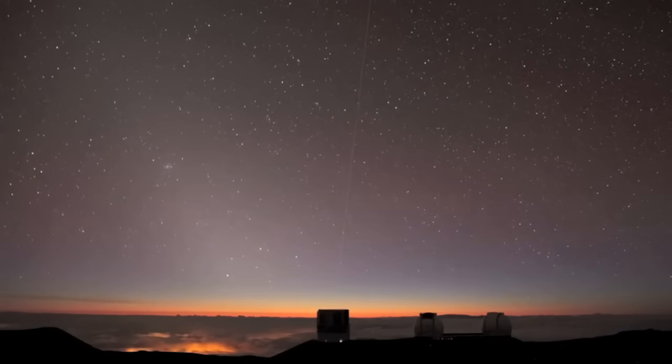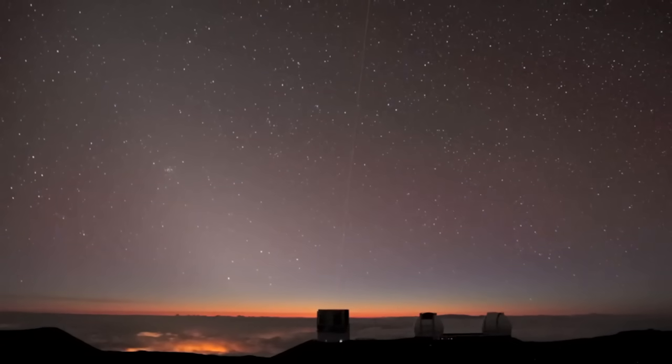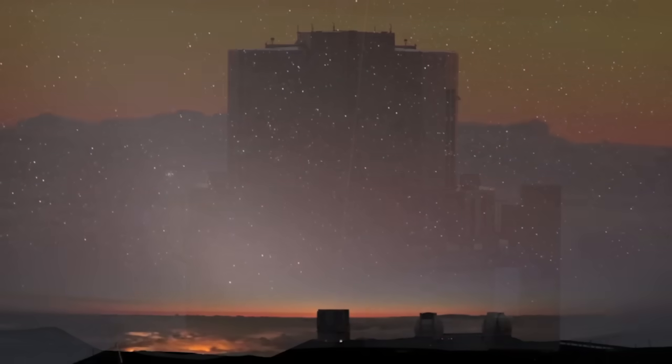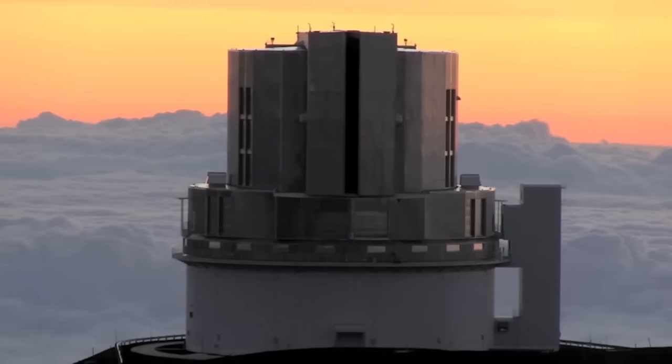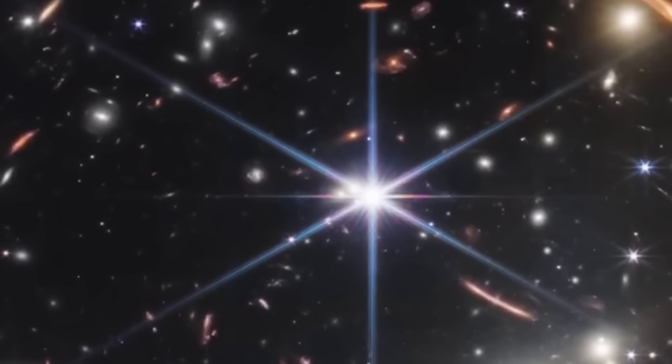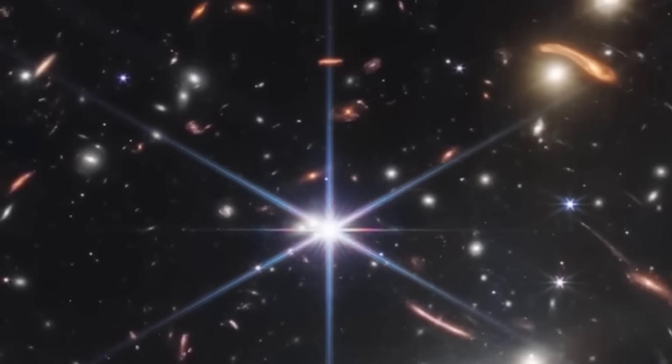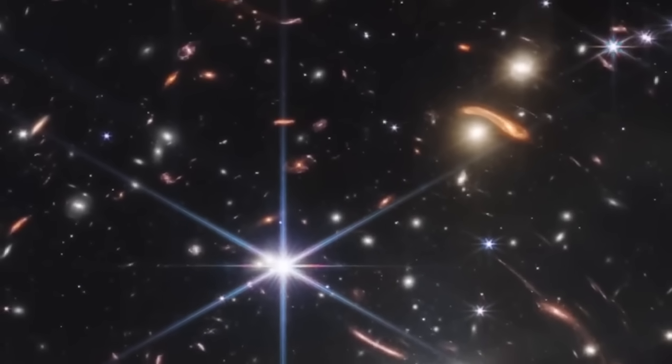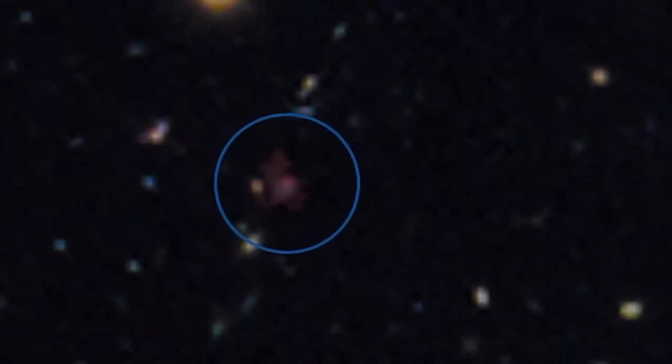The measurement of the redshift of GLASS Z-13 showed that it is located between about 13.4 and 13.5 billion light-years from Earth. This means that if you observe it from Earth, you see this galaxy as it was about 300 to 400 million years ago after the Big Bang.